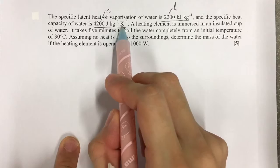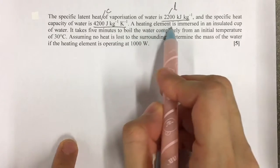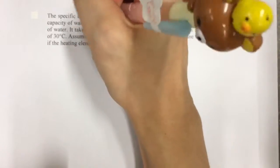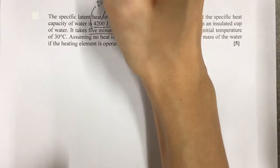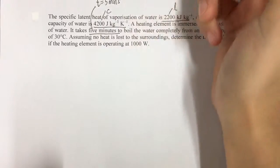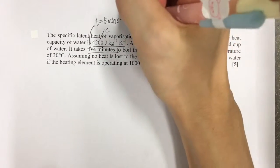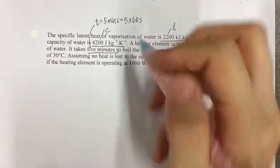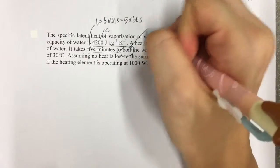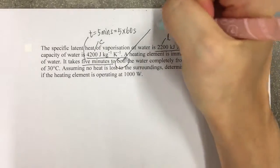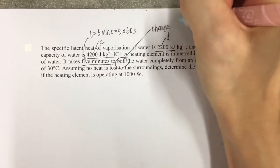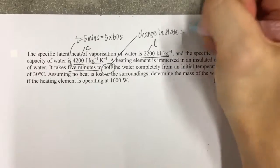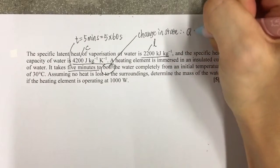A heating element is immersed in an insulated cup of water, and it takes five minutes, so your time is five minutes. In terms of seconds, to boil—when we see the word boiling, it means there is a change in state, and so we will need to use the latent heat formula Q equals mL.